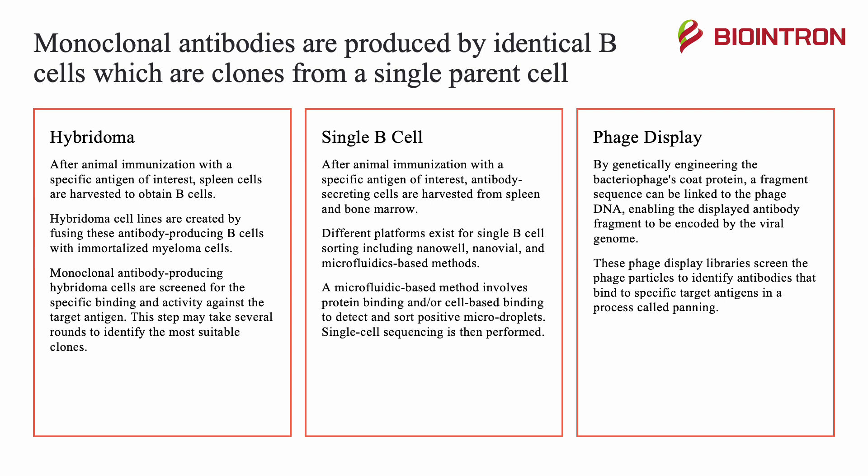There are three common methods to produce monoclonal antibodies. The first is hybridomas. After animal immunization with a specific antigen of interest, spleen cells are harvested to obtain B cells. Hybridoma cell lines are created by fusing those antibody-producing B cells with immortalized myeloma cells. Monoclonal antibody-producing hybridoma cells are then screened for specific binding and activity against the target antigen. This step may take several rounds to identify the most suitable clones.